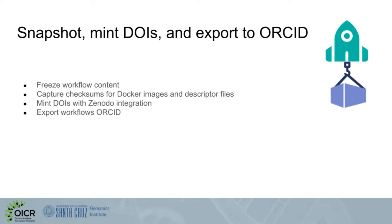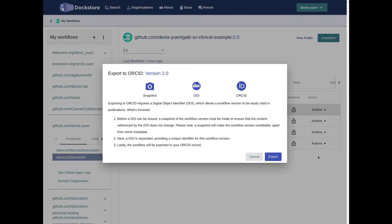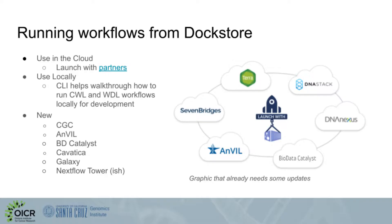You also have the ability to link your Zenodo account in order to mint a DOI for your workflow for publications and to serve as another copy of your workflow. You can also export your workflows to your ORCID account. The way this looks is if you go back to our example workflow, you can go to a particular version of that workflow, click on actions, click on export to ORCID, and here's our wizard that guides you through the process of snapshotting, requesting a DOI, and exporting a particular entry to ORCID.